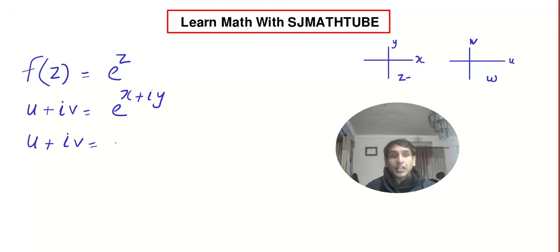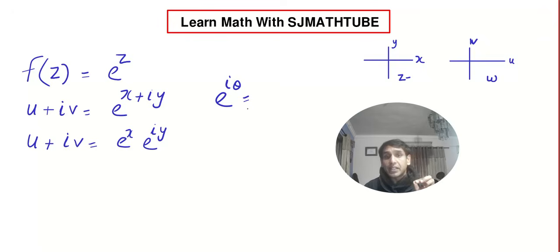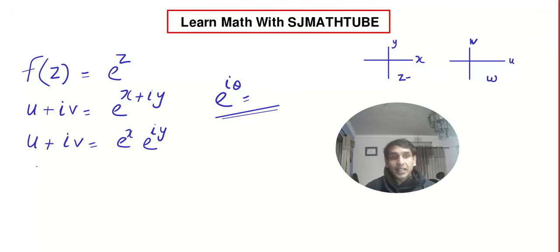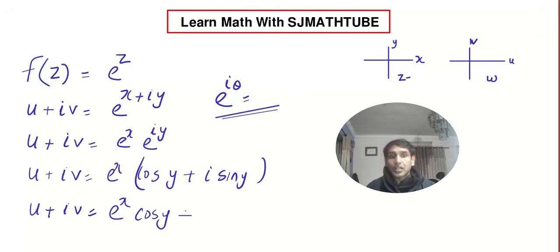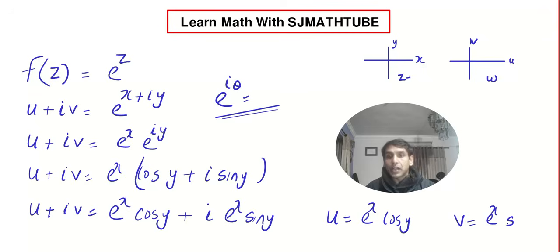We get u plus iv equal to e^x multiplied by e^(iy). Remember, e^(iθ) = cos θ + i sin θ — if you don't know this, I strongly recommend watching the first video in complex analysis. So u plus iv reduces to e^x multiplied by (cos y + i sin y). Distributing, we get e^x·cos y + i·e^x·sin y. Therefore, u = e^x·cos y and v = e^x·sin y.